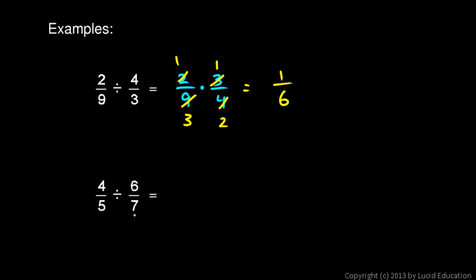Okay, the next one, 4 fifths divided by 6 sevenths. I'm going to write 4 fifths times, and instead of dividing by the fraction, I multiply the reciprocal of the fraction. That will be 7 over 6. Let me make another point.